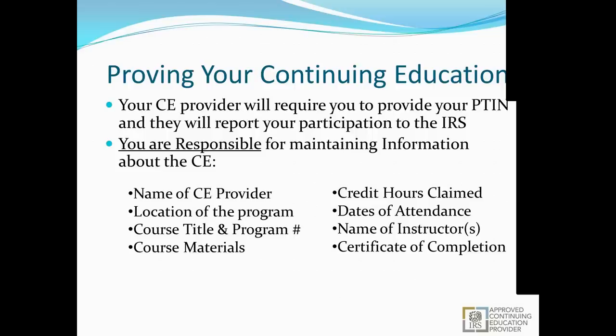All of this information will generally be listed on a certificate of completion provided by the CE provider. If you're doing CE from somewhere else and you don't see the CE provider logo and most of that information is missing, that course is likely not valid. Always look for that CE provider logo. The continuing education certificates through our partner portal are available any time after completion. Print them or save them to email, Dropbox, or online storage so you have them if the IRS ever comes asking. Better to have it and not need it than find yourself needing it and not being able to locate your CE.